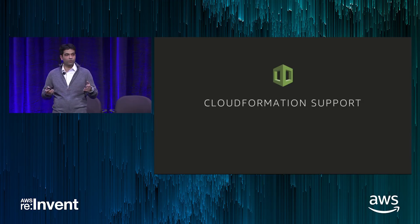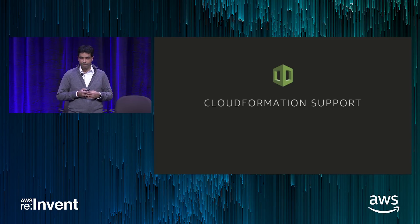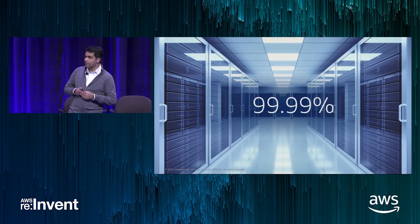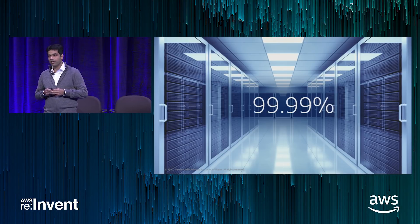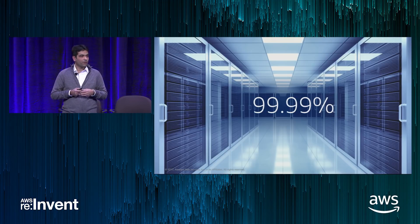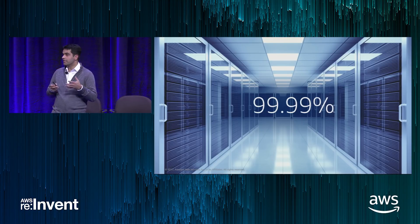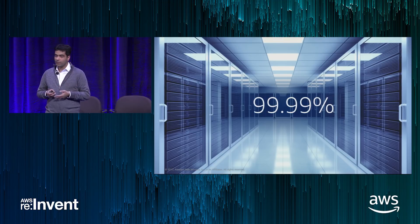We also launched today support with CloudFormation. If you have CloudFormation stacks with ECS and want to set up your default launch types for Fargate and start launching Fargate containers, you should be able to do that. We also have a very strong reliability track record. We have service-level agreements for compute services like EBS and EC2, and we are now extending that to also include ECS and Fargate at 99.99%.